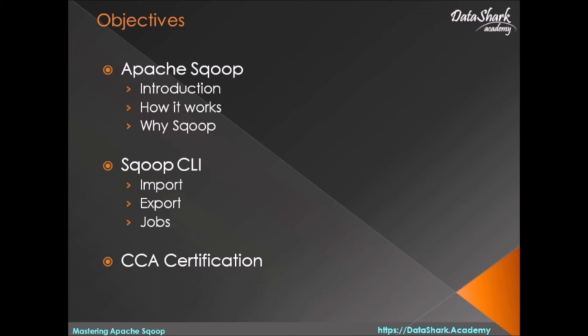You will also learn how to set up Sqoop jobs for recurring data transfers. In the end, you will gain enough knowledge to apply for a big data developer job. If interested, you can also pursue CCA certification after this course. Sqoop is an important part of CCA certification, besides Spark, Flume, Hadoop, and Kafka. Once you are ready with the rest of the technologies, you will easily pass the exam. So why wait — let's start with Sqoop now!